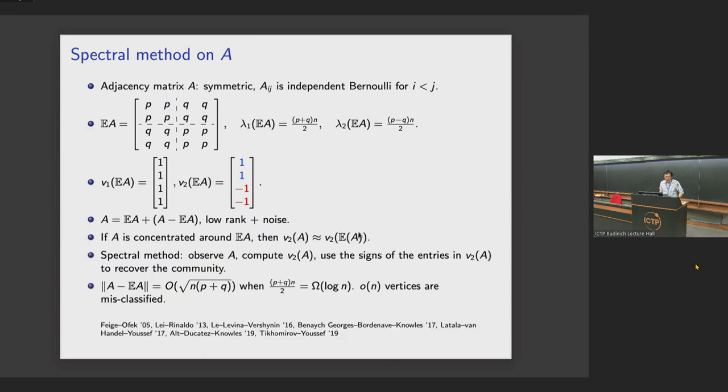The question is, if we have a concentration result, if we know A is concentrated around its expectation, then you can do some sort of perturbation analysis to say the second eigenvector is close to the expectation. That means if we can observe the adjacency matrix A and you do the second eigenvector calculation, you can use the sign of the eigenvector to recover the community. But this is true in the relatively dense model. We know the concentration of the adjacency matrix would hold if the average degree is at least logarithmic. In that case, you do some perturbation analysis like a Davis-Kahan inequality. Then we can show that all but little o(1) fraction of vertices can be correctly classified. This fits in the setup of sparse random matrices. There's a lot of work still going on to understand in different sparsity regimes, what is the behavior of your eigenvalues and eigenvectors.